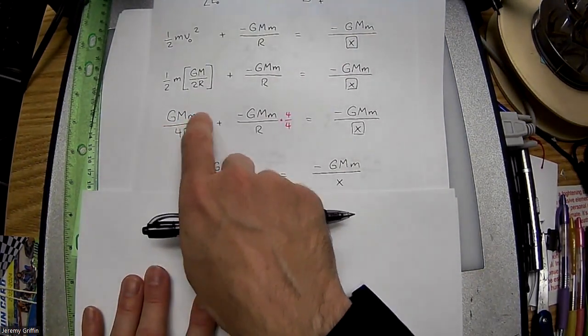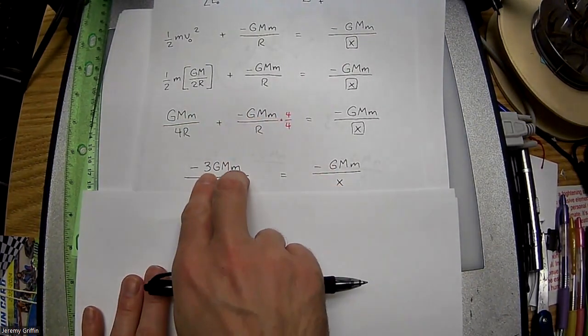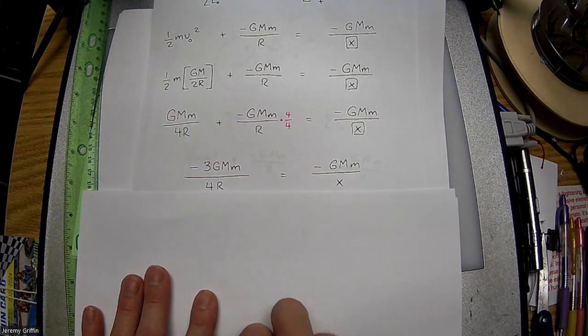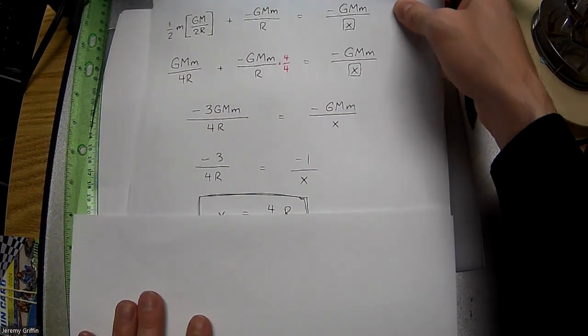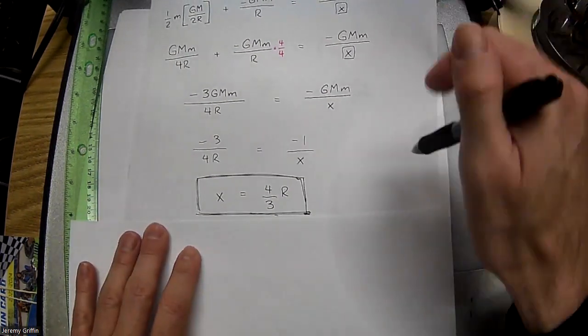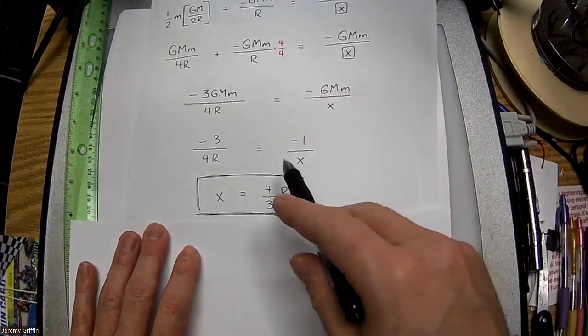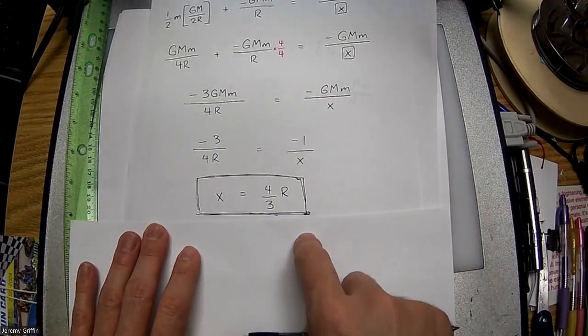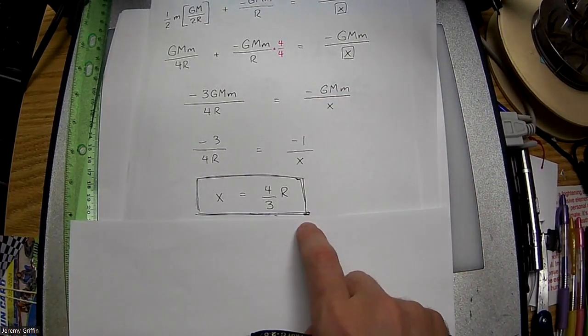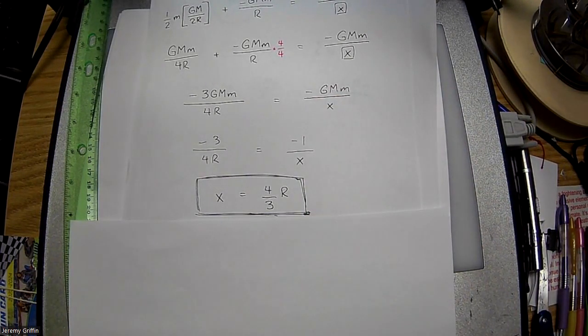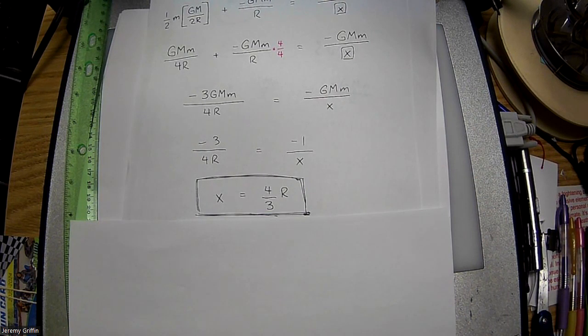Okay, and that gives me GMm minus 4 times GMm, which is negative 3 GMm. Okay, so then the GMm itself cancels, you swap this round, solve for X, you'll cross multiplication, 4 thirds times R, that was the answer that they were looking for, so that was one of the answer choices, and that was the correct answer, right?